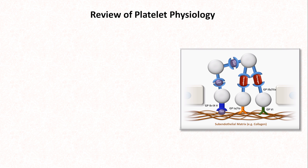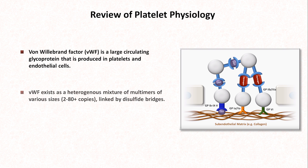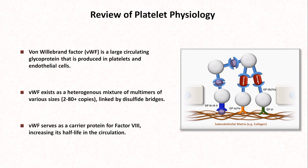Briefly about von Willebrand factor: it's a large circulating glycoprotein that is produced in platelets and endothelial cells. It exists as a heterogeneous mixture of multimers of various sizes linked by disulfide bridges. Von Willebrand factor also serves as a carrier protein for clotting factor VIII, increasing its half-life in the circulation.